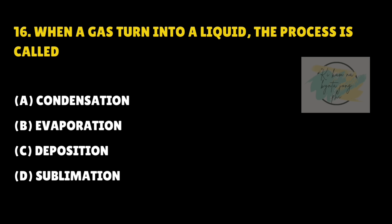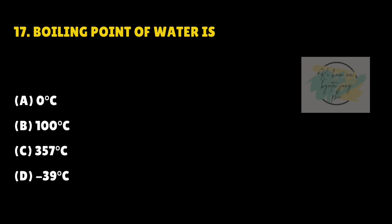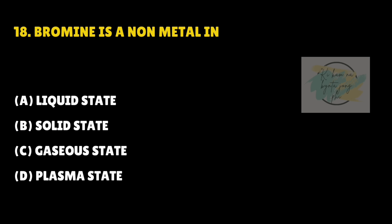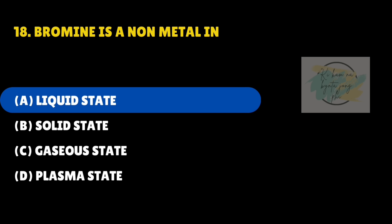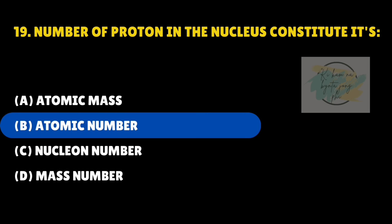When a gas turns into a liquid, the process is called — answer is A — Condensation. The boiling point of water is — answer is B — 100 degrees Celsius. Bromine is a non-metal in — answer is A — liquid state. The number of protons in the nucleus constitutes its — answer is B — Atomic number.